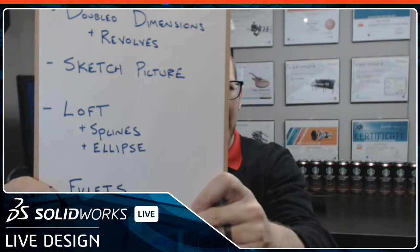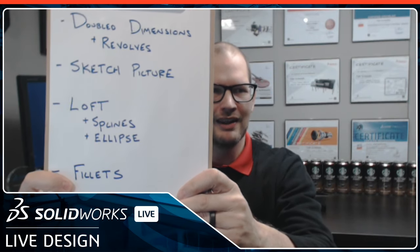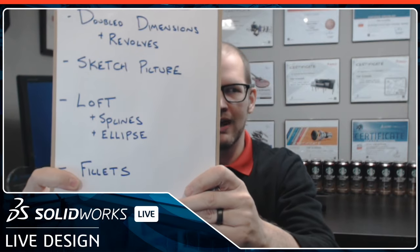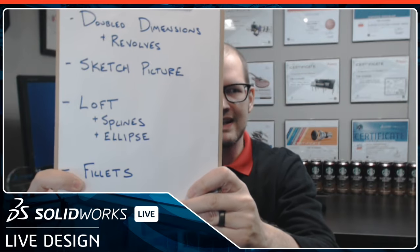We're also going to talk about fillets, different types of fillets we can create, and using sketch picture — bringing a picture in and using it to determine the handle geometry. So the key topics for today's presentation are: revolves and double dimensions, sketch picture, splines and ellipses, and fillets. If you're taking notes, those are the ones to look for.